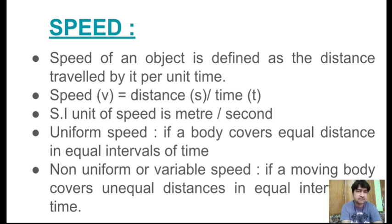You can see the speedometer is revised — it shows instantaneous speed. If you look at 40 kilometers per hour on the speedometer, that means in 1 hour you will cover 40 kilometers. Now, what is the formula of speed? Speed is equal to distance divided by time.